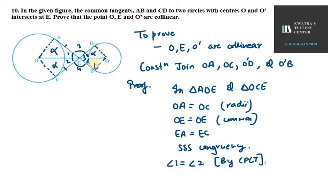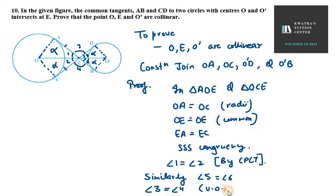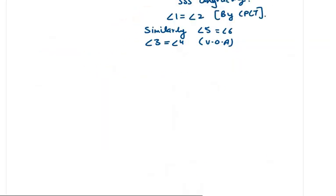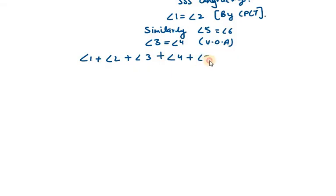Similarly, taking the two triangles O'ED and O'BE, the same conditions apply, so angle 5 equals angle 6. Also, angle 3 and angle 4 are vertically opposite angles. The sum of all angles around point E equals 360 degrees, so angle 1 plus angle 2 plus angle 3 plus angle 4 plus angle 5 plus angle 6 equals 360.